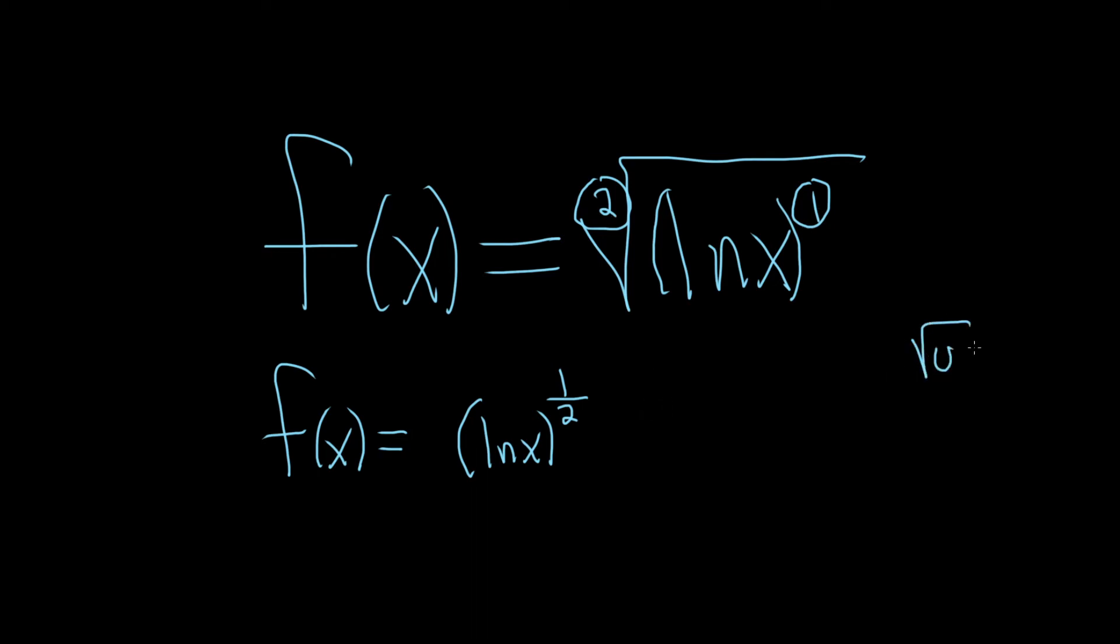If you have the square root of u, that's u to the 1 half. So here we have the square root of ln x, so that's ln x to the 1 half. But it's also important to know that if you do this and this, it's 1 over 2. And the reason is, sometimes these numbers change, so it's good to know it.